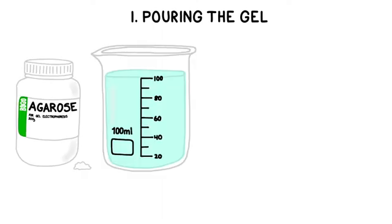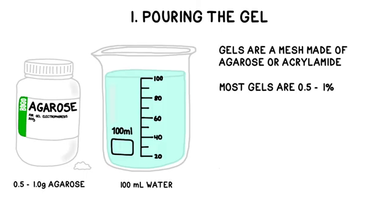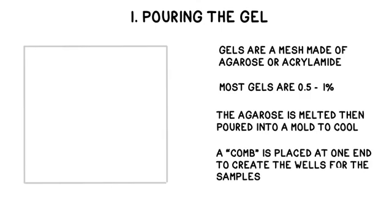Pouring the gel is the process of creating the molecular obstacle course that the fragments will move through. The two most commonly used gels are composed of either agarose or acrylamide. Usually, 0.5% to 1% agarose is used, or 0.5 to 1 gram per 100 milliliters. Any more than that and the gel may be too dense for molecules to pass through. The agarose is melted, then poured into a mold in the correct shape. Before it cools, a special comb is placed at one end, creating a line of divots, or wells, to hold each of the samples.